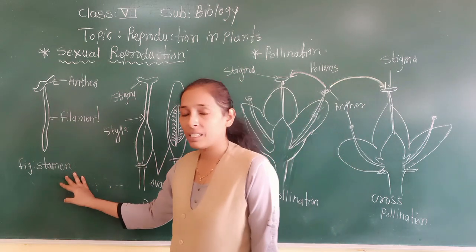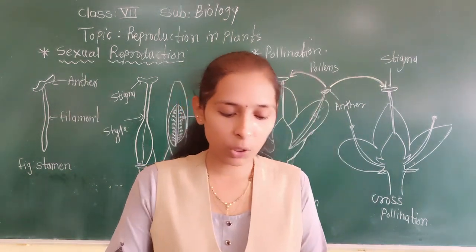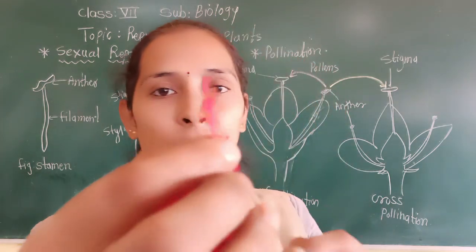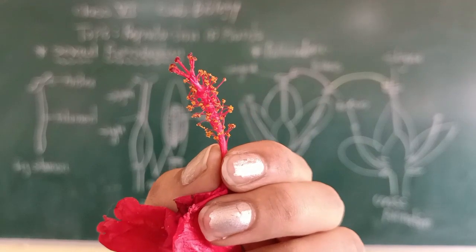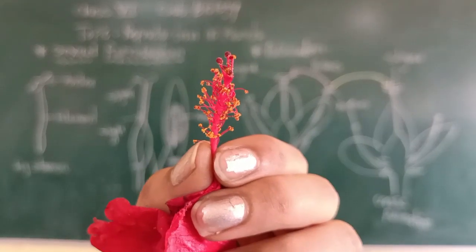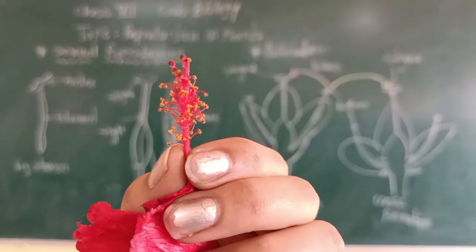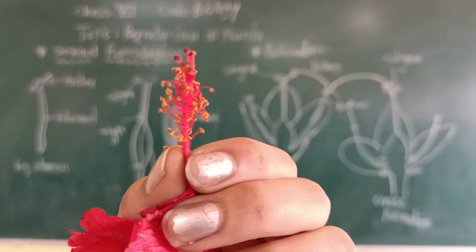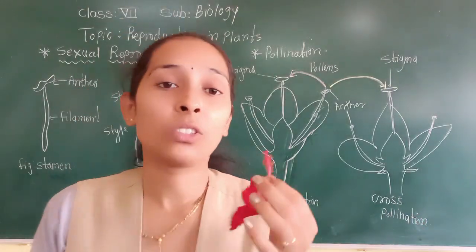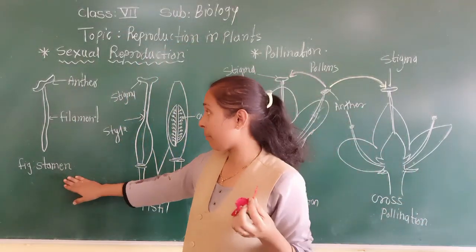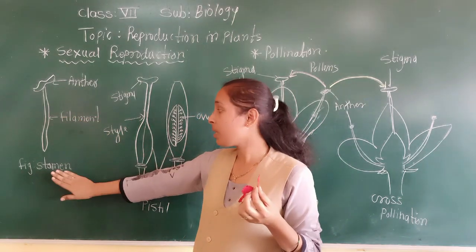The stamen consists of two parts. Here I will show you. The yellow color structures you can see — those are the anthers. The anthers are connected with one tube-like structure which is called the filament. So stamen contains anthers and filament — these are the two parts of the stamen.